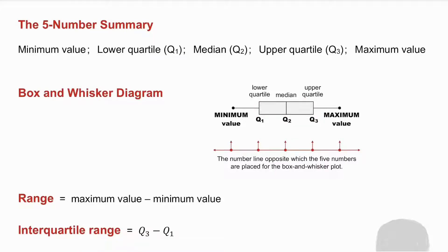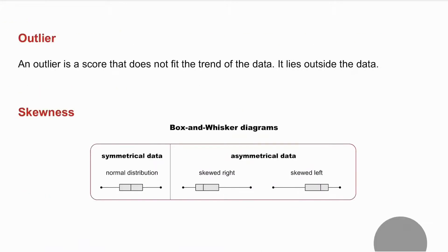Now the interquartile range is not affected by any outliers. An outlier is a score that does not fit the trend of the data. It lies outside the data.